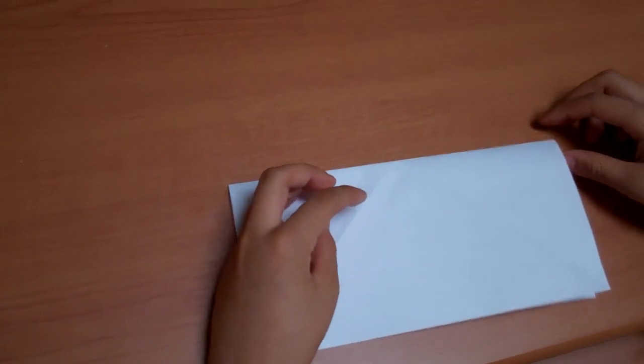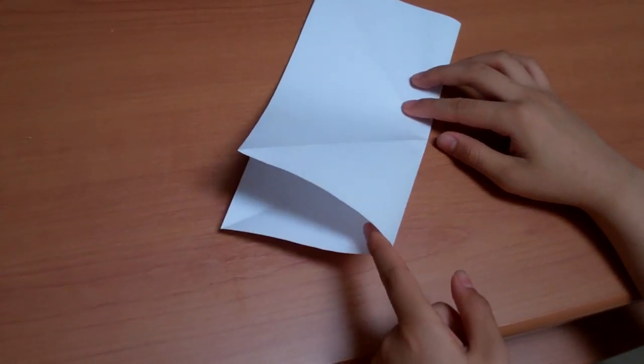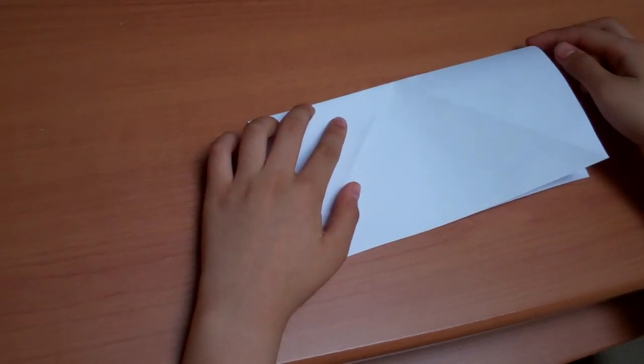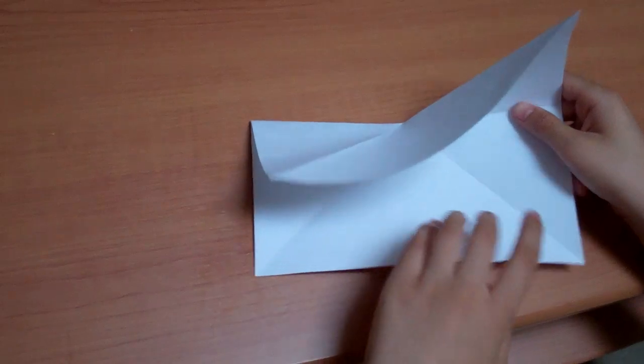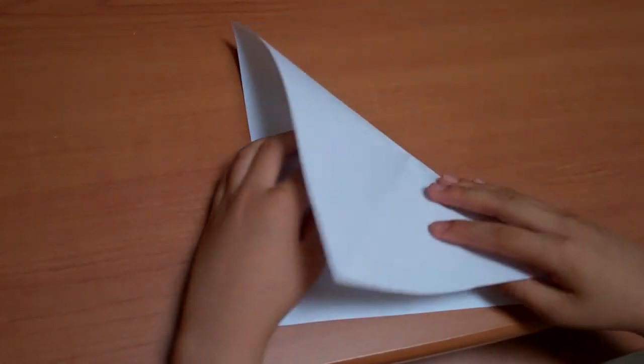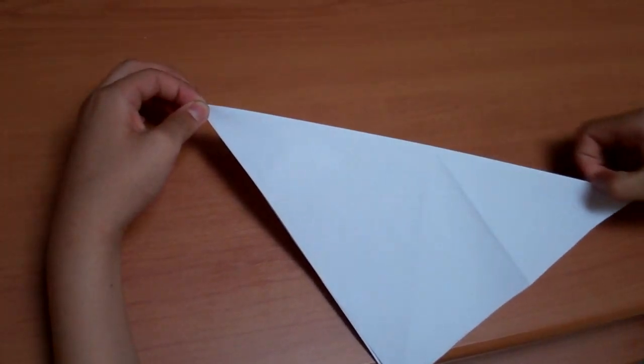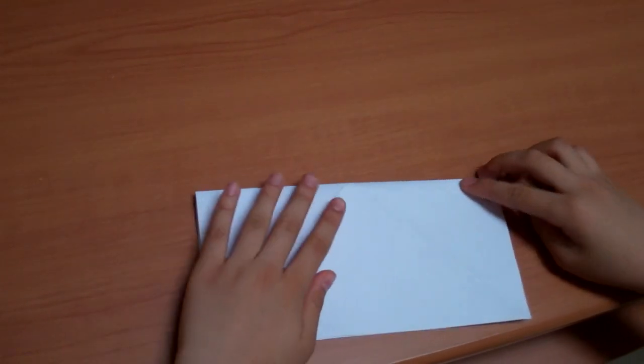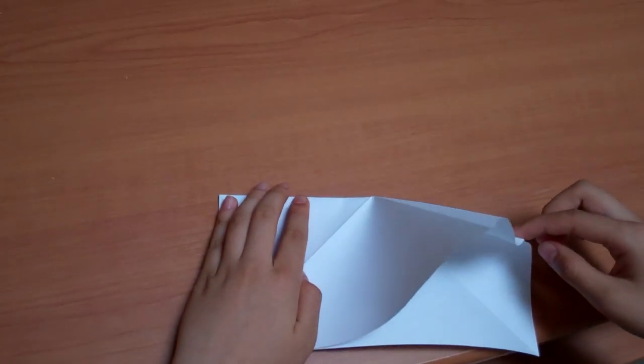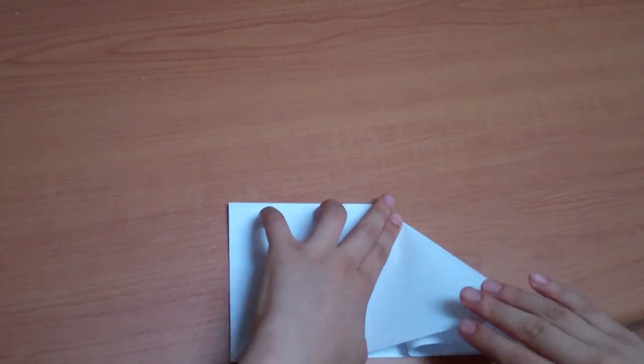So now what you do, all you have to do is just see this flap right here, all you have to do is just push this in. You need really good folds. So if you don't have very good folds I suggest you go back and run your fingernails against it. That will make it easier. So now just push and it should lift up like this. And then just flatten it out.